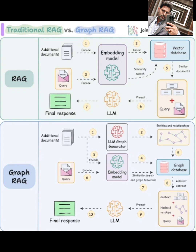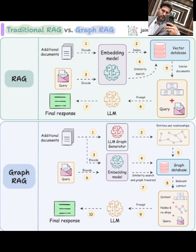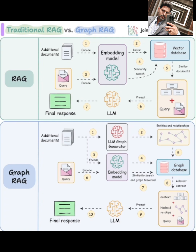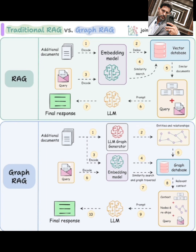Our query is still encoded into an embedding, which is used to perform a similarity search within the graph database. However, instead of just retrieving similar documents, we also perform a graph traversal — exploring the connections and relationships between the entities found in the graph. The result is relevant context that includes not just similar documents, but also related entities and their connections. This context, which includes nodes and relationships, is combined with our query in a prompt for the LLM, which uses this richer, relationship-aware information to generate a final response.